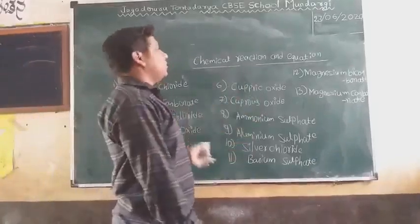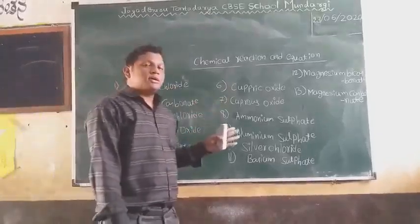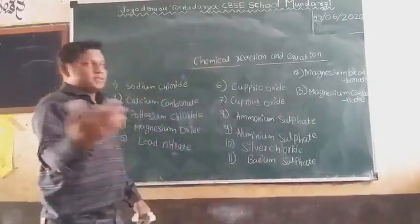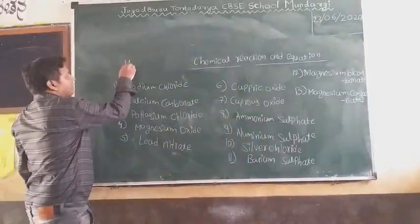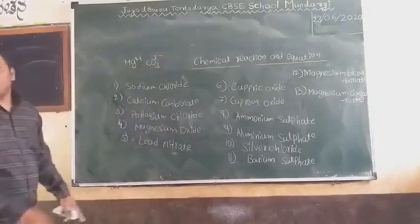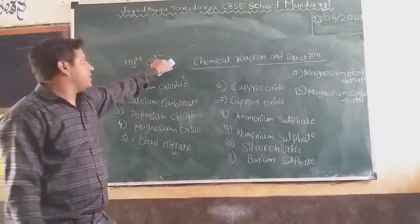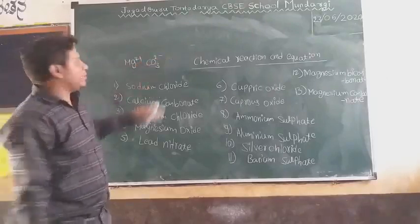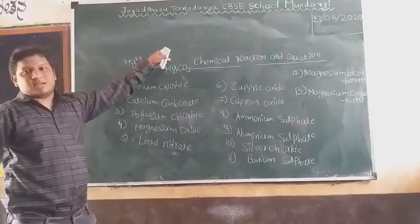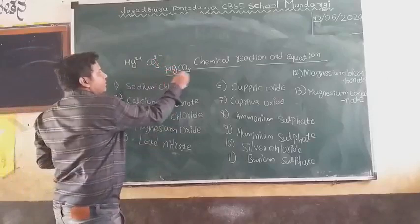I will solve one example — magnesium carbonate. From the valency chart: magnesium is Mg 2 plus and carbonate is CO3 2 minus. When you have the same charge on both radicals, the compound becomes electrically neutral. Since both have charge 2, you simply write MgCO3. When charges are the same, there is no need to cross — you write only MgCO3.